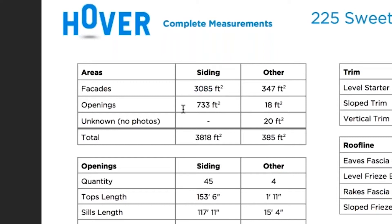Aside from that, there's an additional 733 feet of window and door openings within those 3,085 square feet of siding wall area, for a total exterior wall surface and opening area of 3,818 square feet. Under the other column, we have a total of 347 square feet of other wall area. Later on in the report, you'll find tables that will tell you the individual wall sections that make this up.